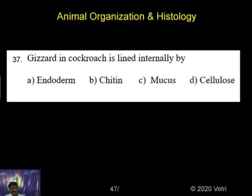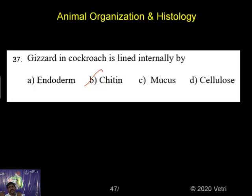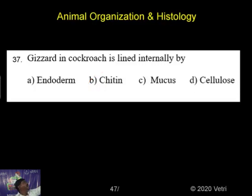What is the lining of the internal region? The gizzard is lined internally. Cetein teeth are present in the gizzard. The gizzard is inside and processes food — some food items enter the gizzard and cetein helps to digest the food particles. Option B is the answer.